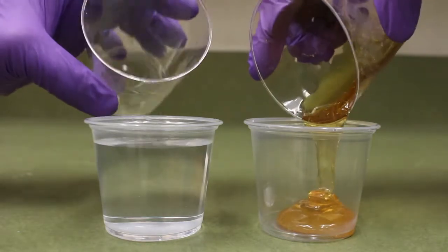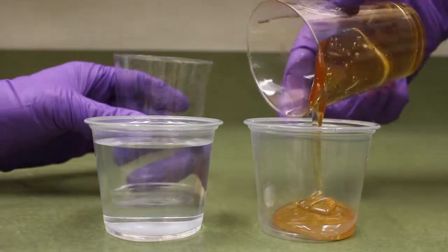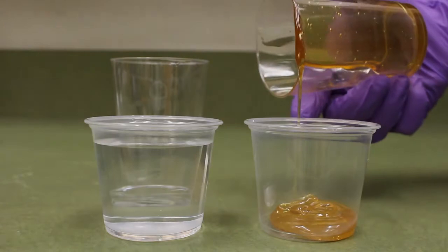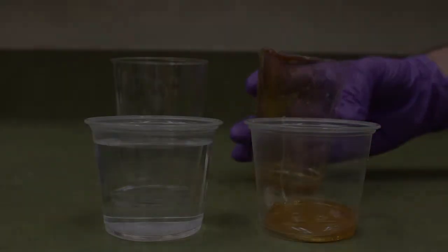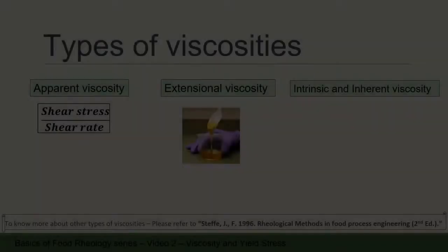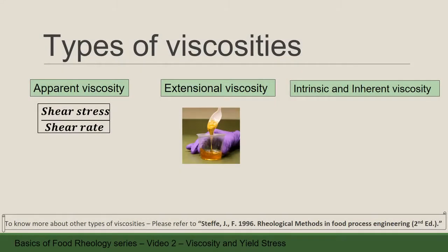This is a simple explanation of viscosity. However, viscosity in food rheology is more complex and has different types. Different types of viscosity could help to explain the characteristics of a fluid.